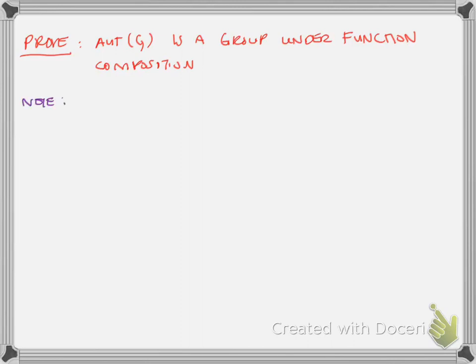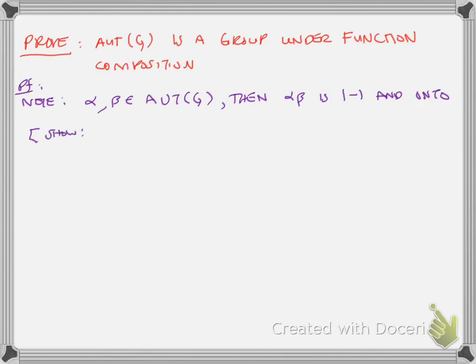We can start our proof by noting that if alpha and beta belong to the automorphism of G, then because alpha and beta are isomorphisms from G to G, alpha composed with beta is 1-to-1 and onto — we already know that. So we first need to show that alpha∘beta belongs to Aut(G); this is the closure part of showing it's a group.